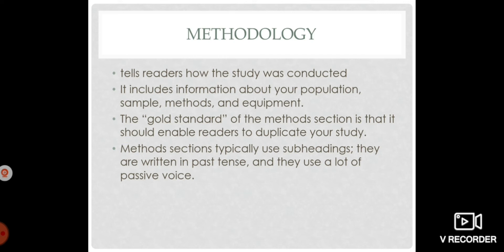Then, the methodology. The methods section tells the reader how you conducted your study. It includes information about your population, the sample, the methods, and also the equipment. The gold standard of the methods section is that it should enable readers to duplicate your study. You should write your methodology in details. You should make sure that whoever will be reading your study, they can do your study as well just by following your methodology.